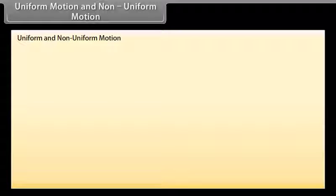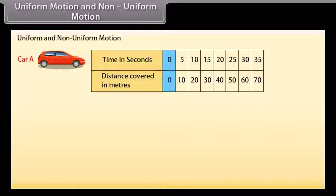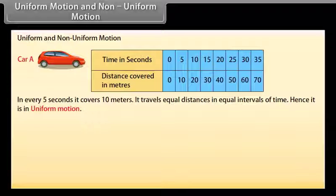To understand uniform and non-uniform motion, let's take one example. Look at this table — this is the distance covered by car A. We can see that in 0 seconds it covers 0 meters, in 5 seconds it covers 10 meters, in 10 seconds it covers 20 meters, and so on. In every 5 seconds it covers 10 meters — it travels equal distances in equal intervals of time. Hence it is in uniform motion.